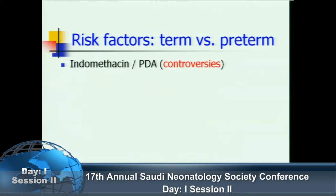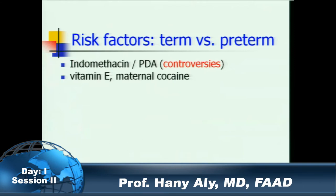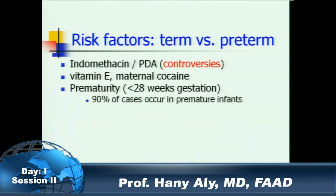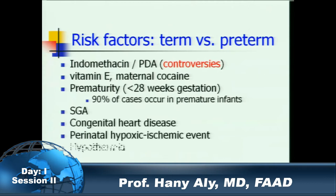Risk factors include term versus preterm status, indomethacin and PDA — does it really cause NEC or is it just associated? Most probably no. Indomethacin may be associated with bowel perforation, and the PDA association with NEC has most probably been sorted out already. Other risk factors include Vitamin E deficiency, maternal cocaine use, prematurity less than 28 weeks gestation where 90 percent of cases happen, SGA, presence of asphyxia, infection, and polycythemia.